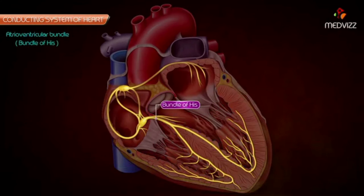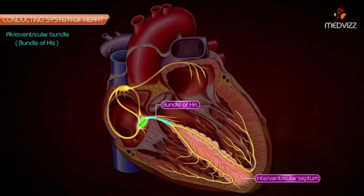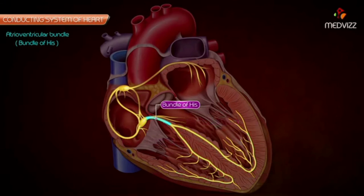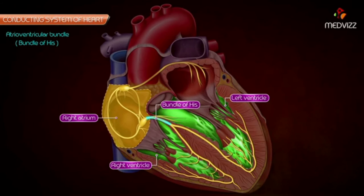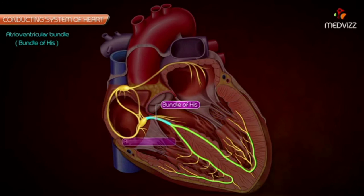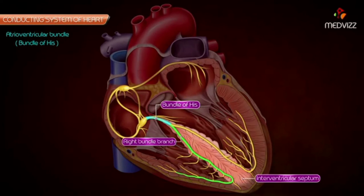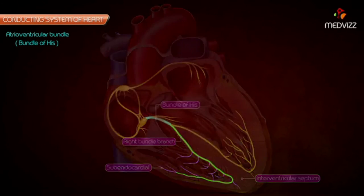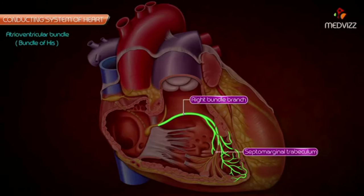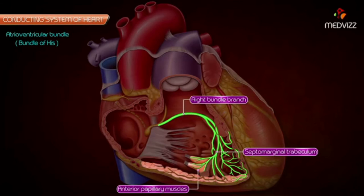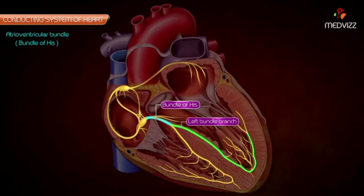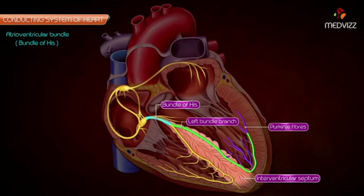Atrioventricular bundle: it begins from the AV node, crosses the AV ring, and runs along the inferior part of the membranous interventricular septum, where it divides into left and right branches. Since the cardiac skeleton — the fibrous framework of the heart — separates the muscles of the atria from the muscles of the ventricles, the bundle of His is the only means of conducting impulses from the atria to the ventricles. Right and left branches of the bundle of His: the right branch passes down the right side of the interventricular septum and becomes subendocardial. A large part continues in the septomarginal trabecula to reach the anterior papillary muscle and anterior wall of the ventricle, and its Purkinje fibers spread beneath the endocardium. The left branch descends on the left side of the ventricular septum and divides into Purkinje fibers distributed to the septum and left ventricle.